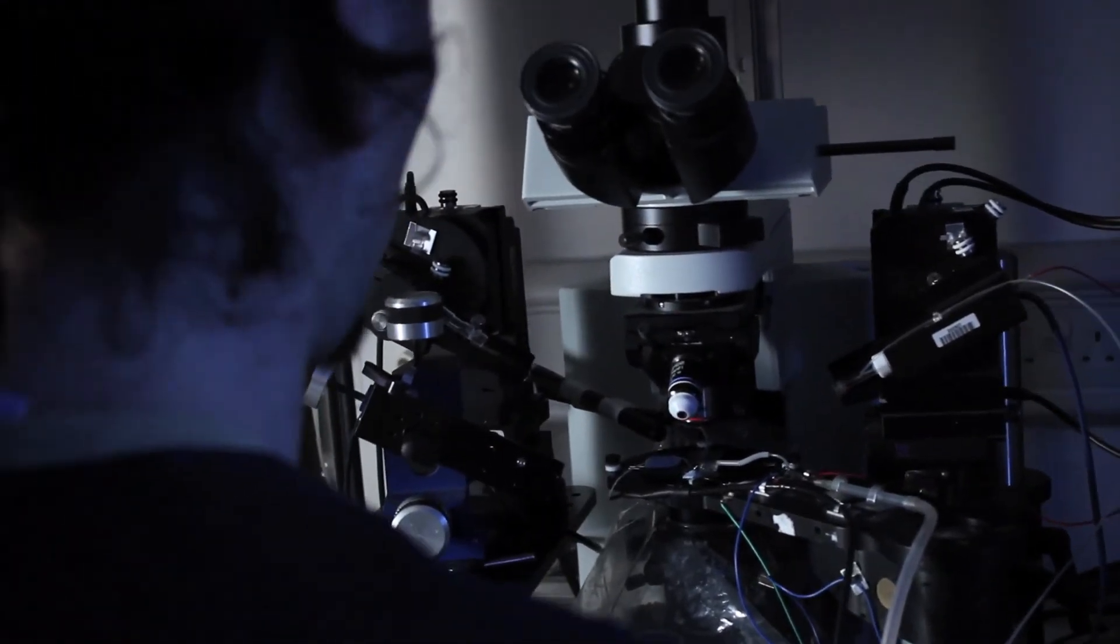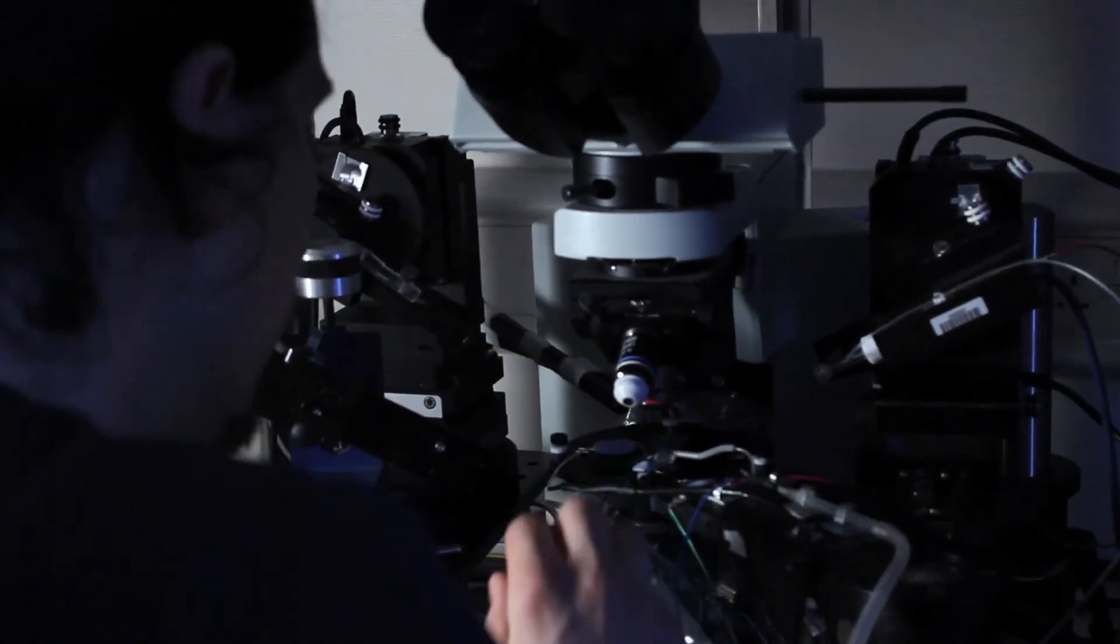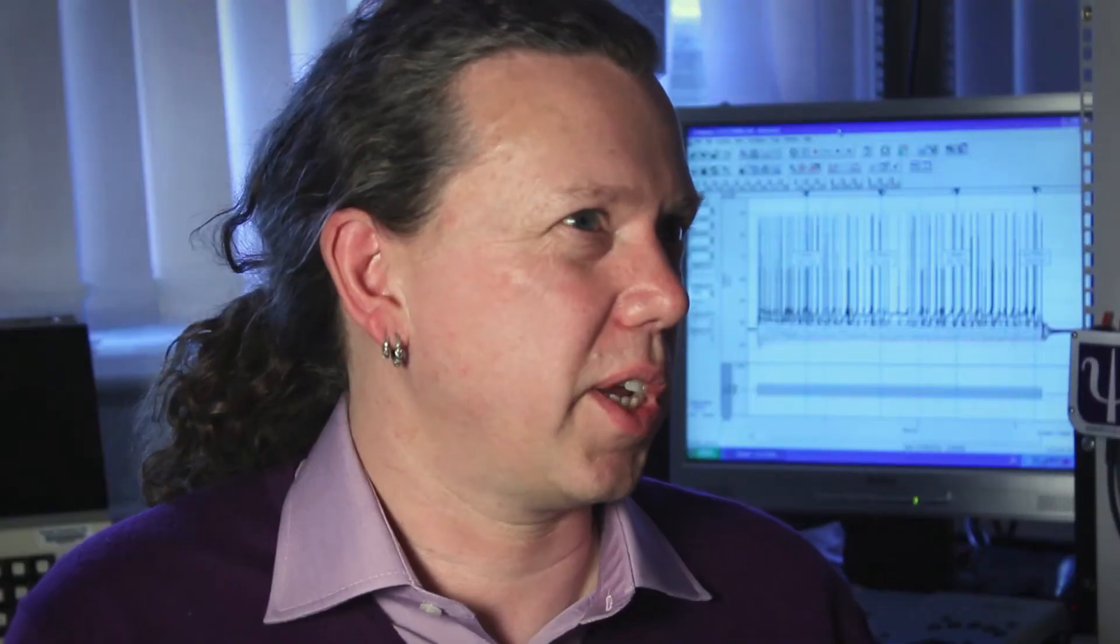Of course we need many other types of science and many other disciplines to help us understand it. We need anatomists to tell us how the brain wires up, which bit connects to which bit. We can probe that to some degree with electrophysiology and electrical measurements. But also it helps just to have a physical view of the wiring diagram, which you can get from anatomy.